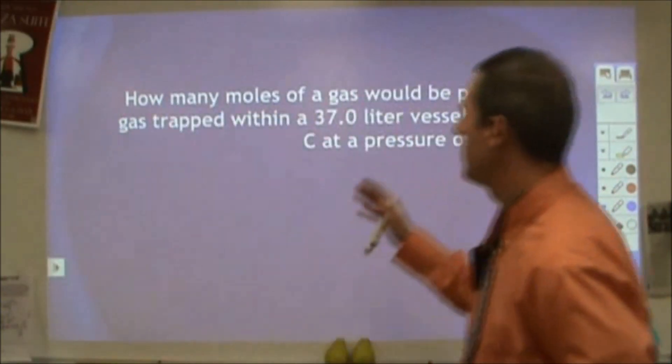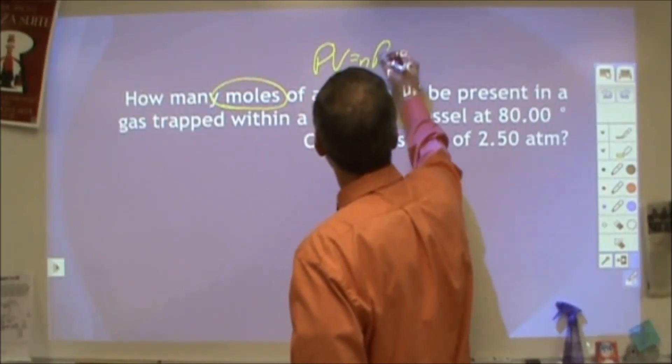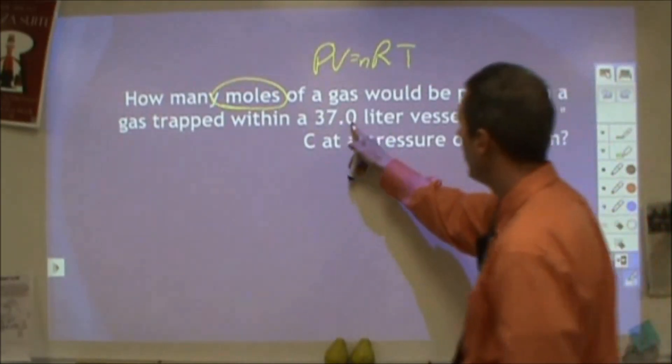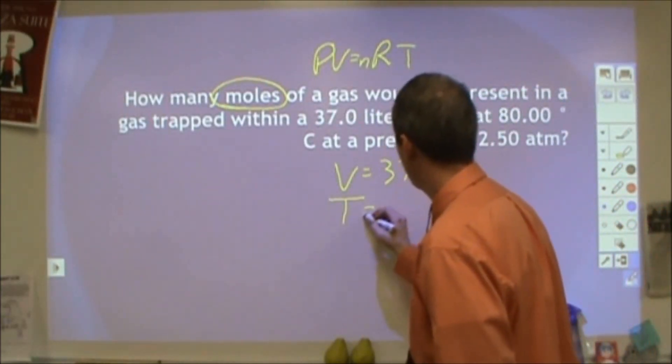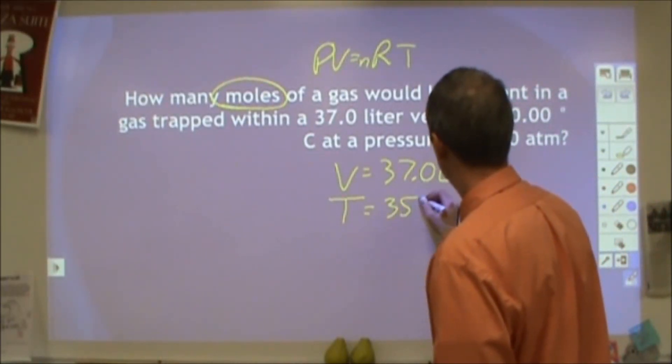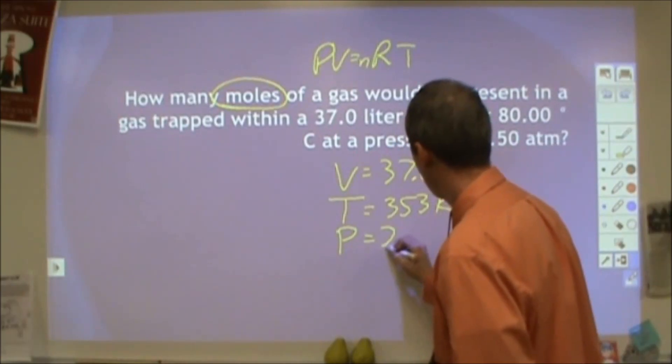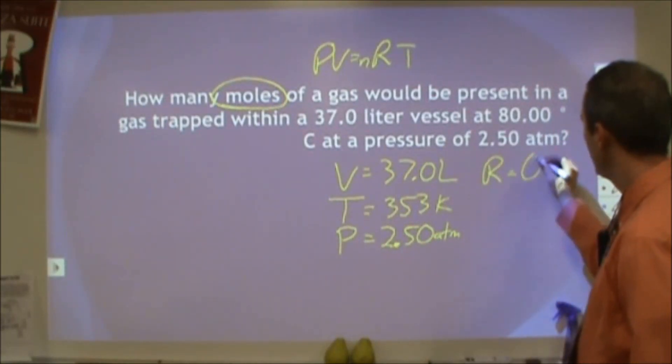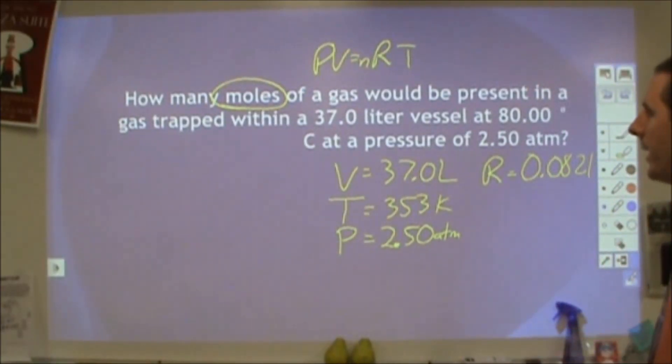Now, in this next one it says how many moles. So right away when it says moles, that's an indicator that you're using PV equals NRT. And this is not an exception to that. Moles of gas to be present in a gas trapped with a 37 liter vessel. So here's our volume at 80 degrees Celsius, so our temperature. And I would immediately convert that into Kelvin. So 353 kelvins at a pressure of 2.50 atm. So here we have a pressure, temperature, and volume. The thing we're missing is moles. Because our pressure is in atmospheres, the R we would use would be 0.0821. And then we'll go ahead and plug those things in and solve for N to get the moles.